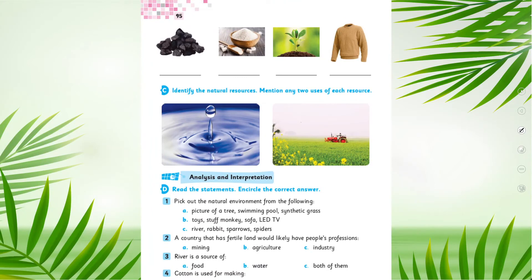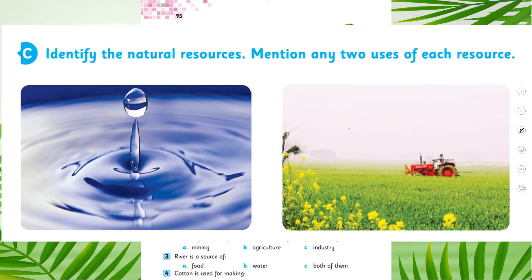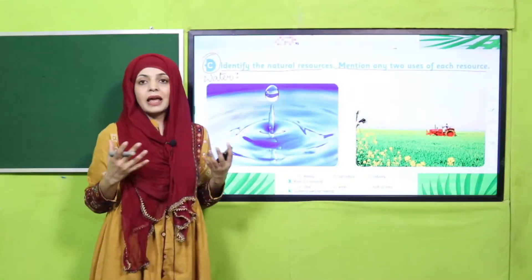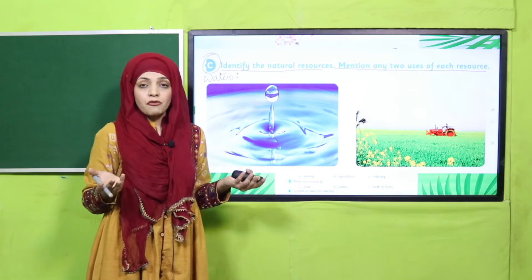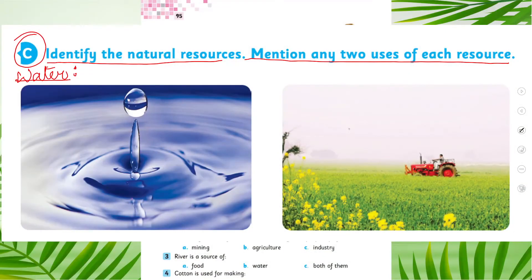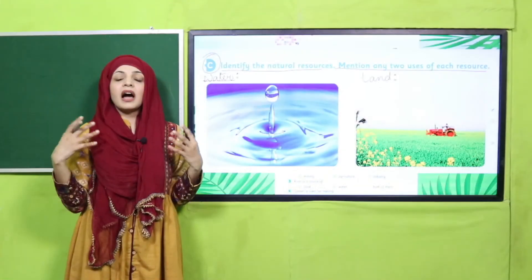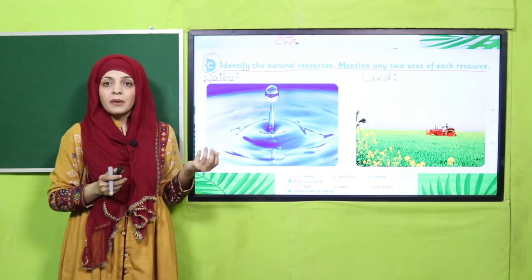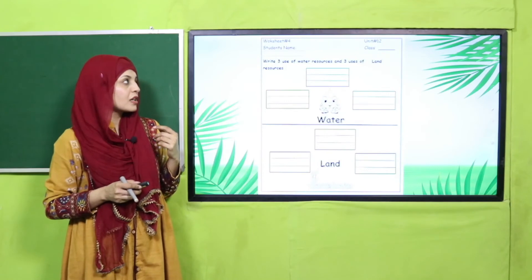Now open page number 95 in your books. You can see reading practice number C: 'Identify the natural resources and mention any two uses of each resource.' The first one is water — its uses are washing, cleaning, bathing, generating electricity, and giving us seafood. For water, just write 'water' on top. The next one is land — its uses include getting crops, coal, energy, and salt. These are the uses and importance of land.